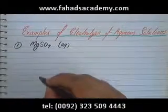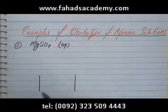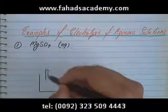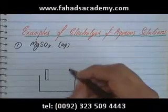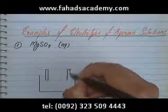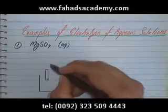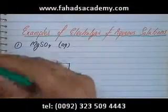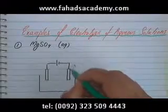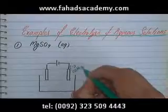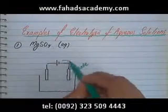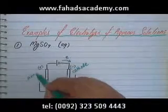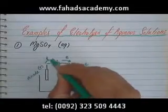We're going to draw a beaker with two inert electrodes dipped into it. Remember, we're doing the electrolysis of these aqueous solutions using inert electrodes made from graphite or platinum, and these electrodes are connected to a battery. The right-hand side is the negative terminal — this is called the cathode — and the battery provides electrons from this side. On the other side is the positive terminal, called the anode, and the battery pulls electrons from this side.